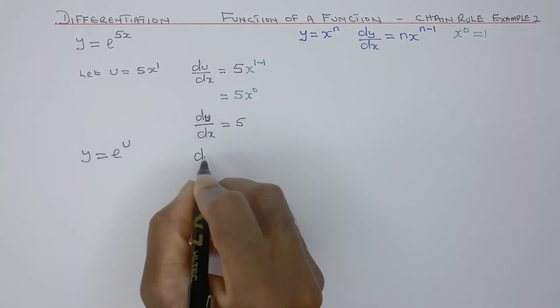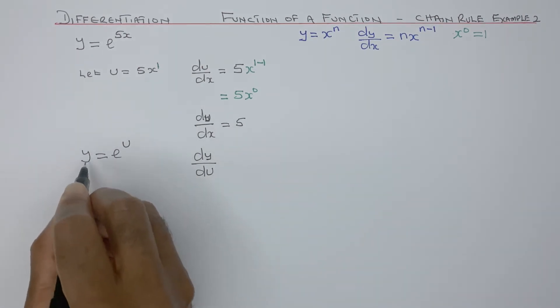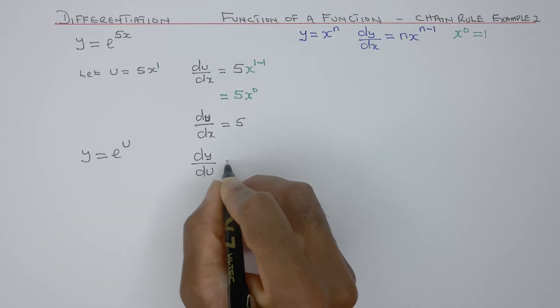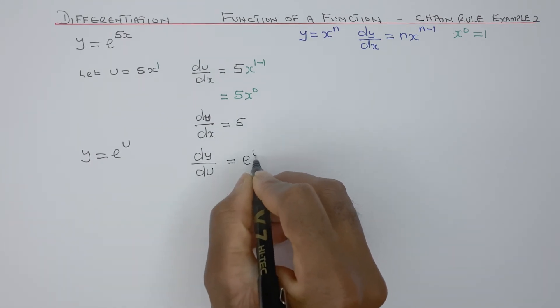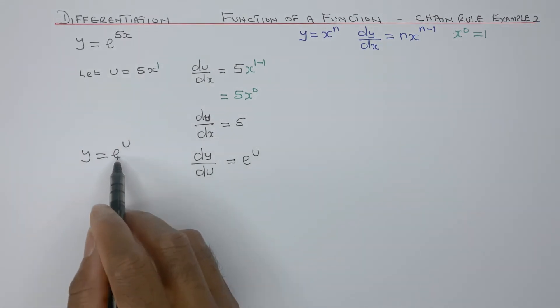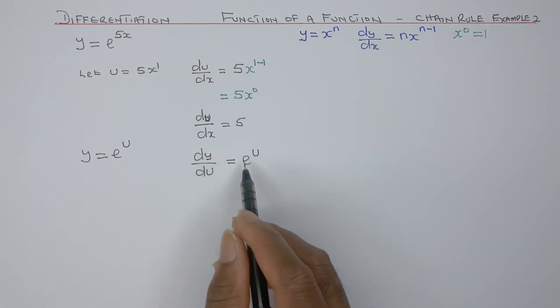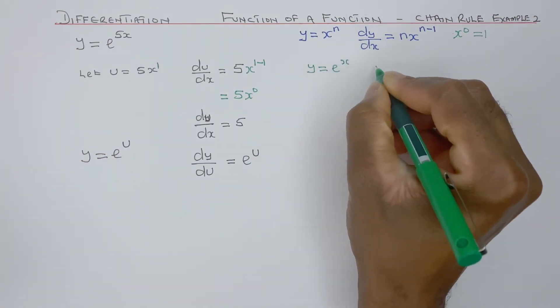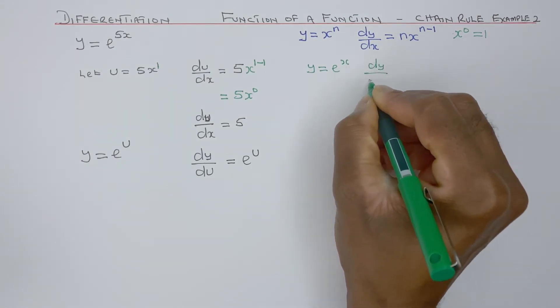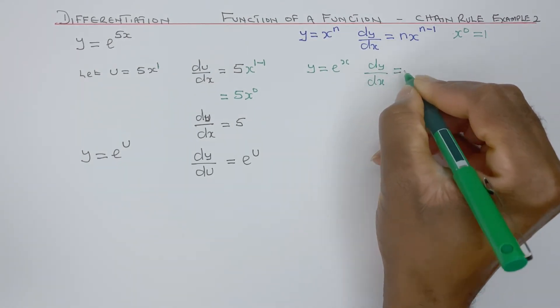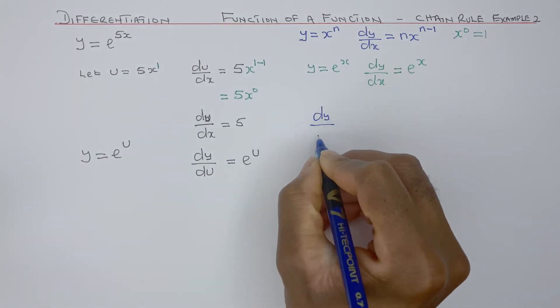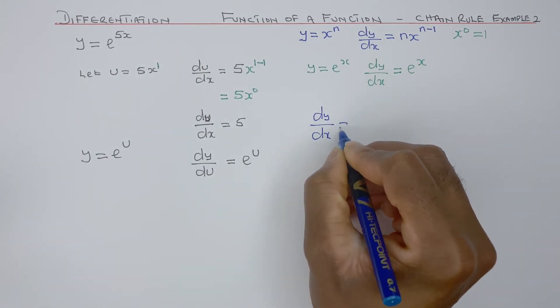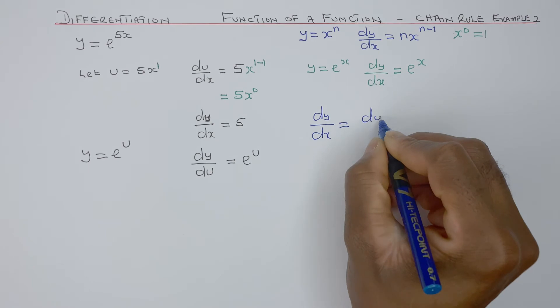y now equals e to the power of u. dy/du, differentiating y with respect to u, is e to the power of u. If you differentiate e to the power of x, dy/dx will be e to the power of x. y equals e to the power of x, dy/dx is also e to the power of x.